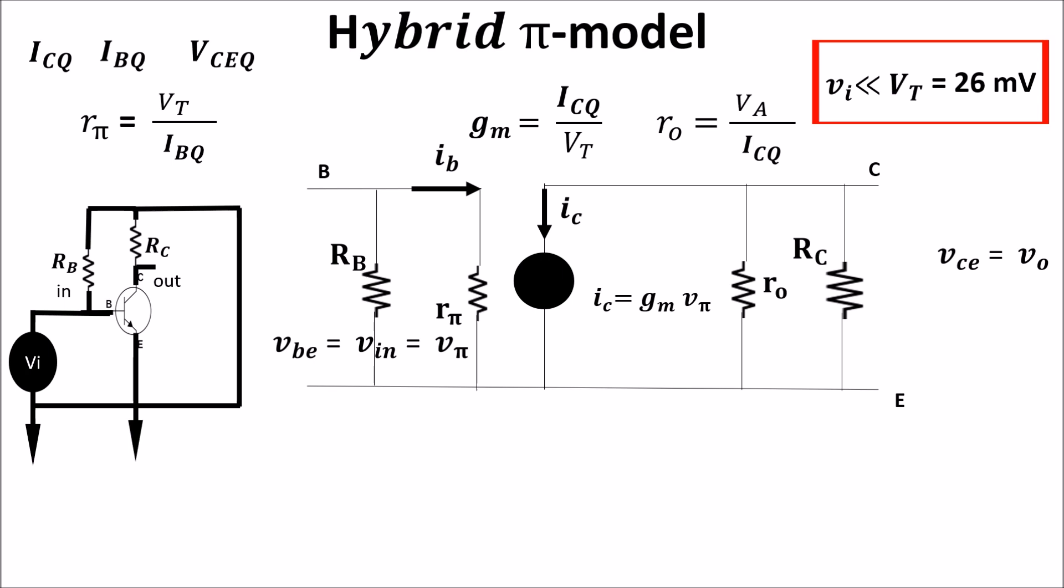We see that RB is between the base and the ground, and RC is between the collector and the emitter. And we get our small signal model for low frequency, because for high frequency we should take into account capacitance effects and other resistances.